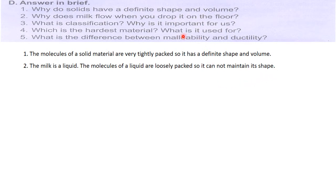The milk is a liquid. The molecules of a liquid are loosely packed so it cannot maintain its shape. That is why it flows on the floor once we drop it, right. What is classification? Why is it important for us? Classification is grouping of things based on the similarities and dissimilarities between them.